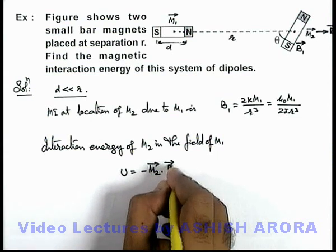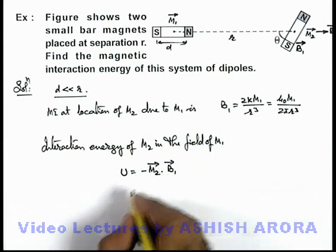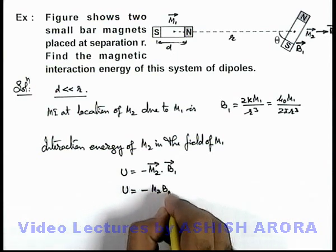dot B1. B1 is the field due to m1 at the location of m2, so in this situation it can be given as minus m2 B1 cos θ.